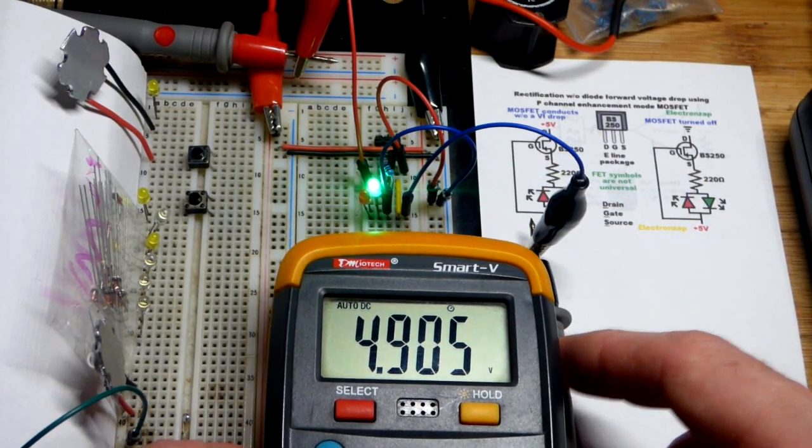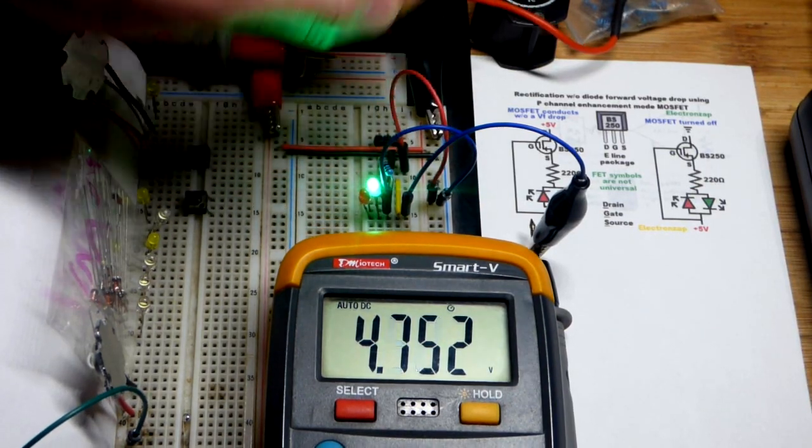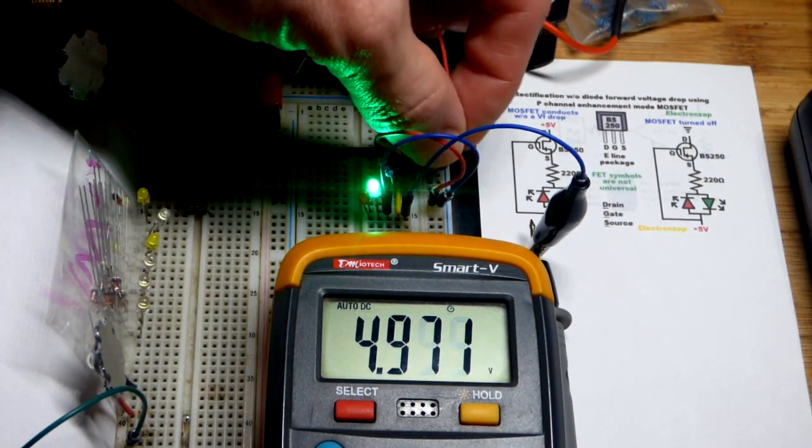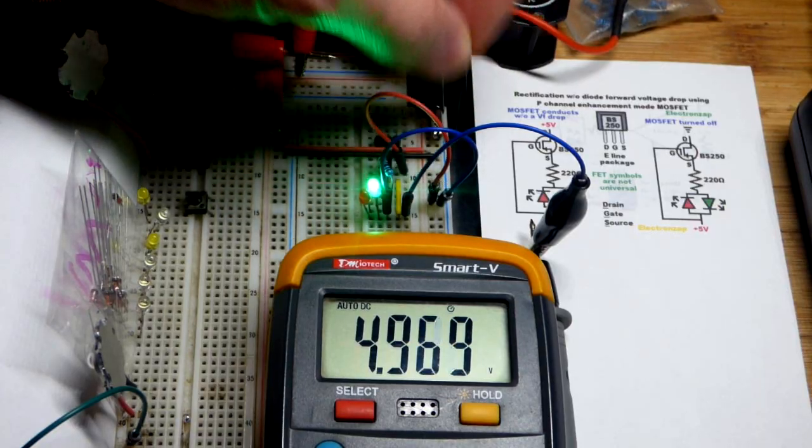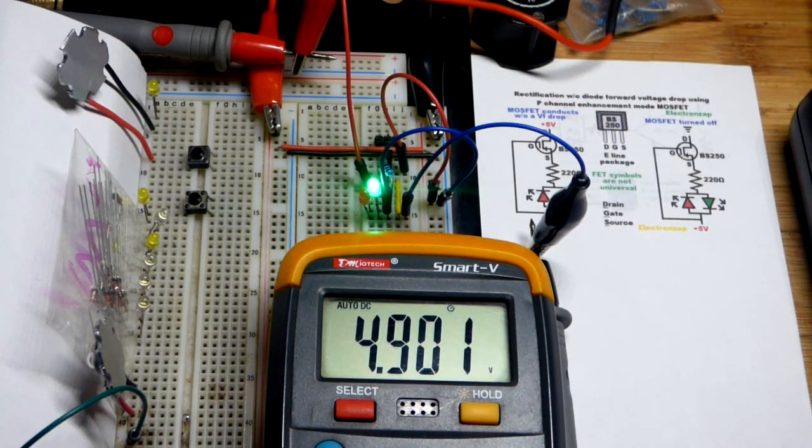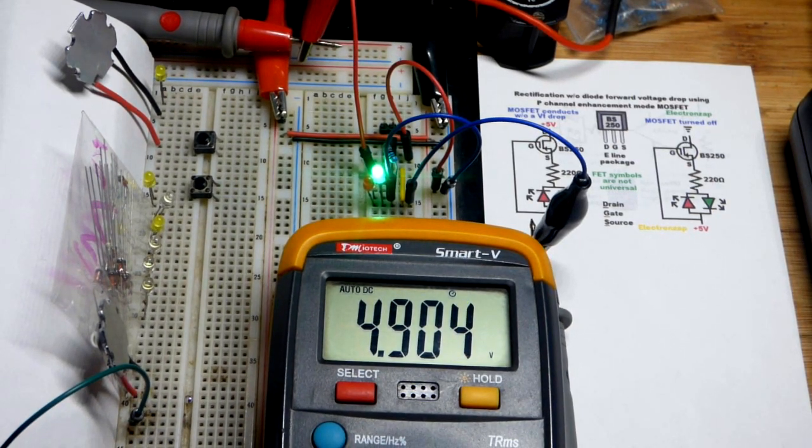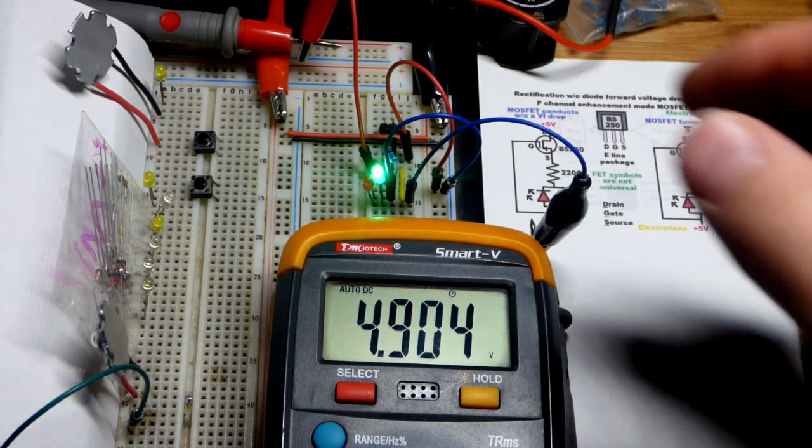So we have, out of 5 volts, about 4.9 volts across the load right there, which is just a resistor and then two LEDs that are wired as a polarity indicator. Make sure I get that in the right spot right there. And so we're losing about 0.1 a volt out of 5 right there.